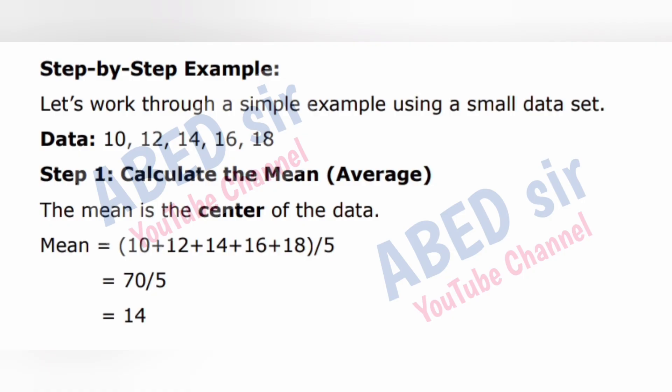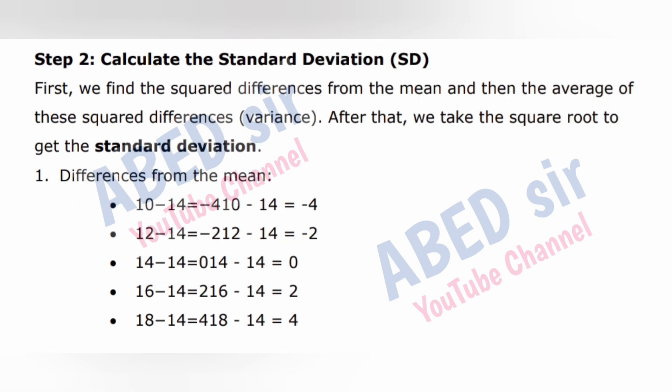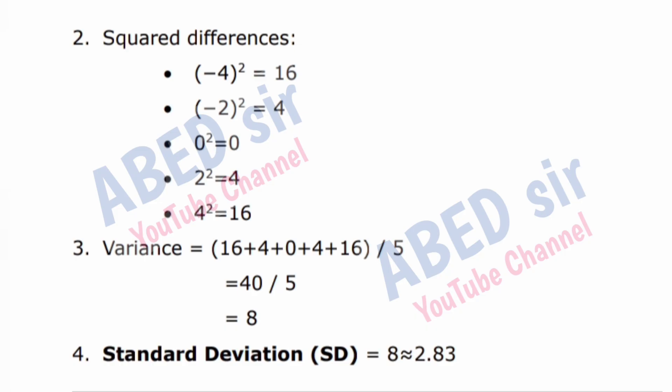Step 1: Calculate the mean. Mean = (10+12+14+16+18) / 5 = 75/5 = 14. Step 2: Calculate the standard deviation (SD). Find squared differences from the mean, then their average (variance). Variance = 8. SD = √8 ≈ 2.83. Step 3: Understand the shape — kurtosis. Since data is evenly distributed, values are not too far apart or too close together. The distribution is mesokurtic — it has a normal shape. Kurtosis value near 3 means normal distribution (mesokurtic).